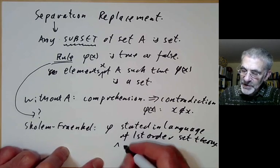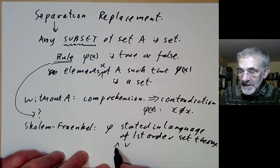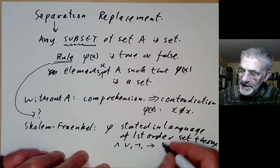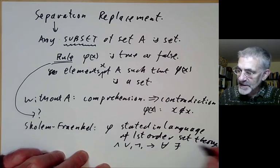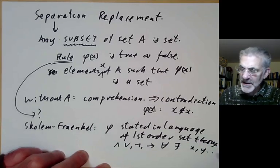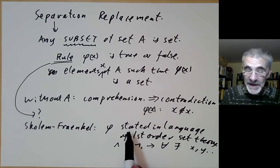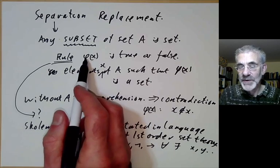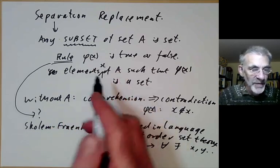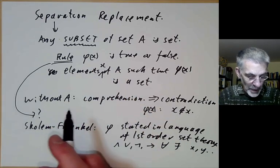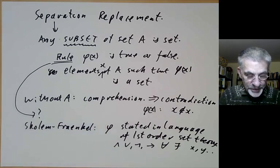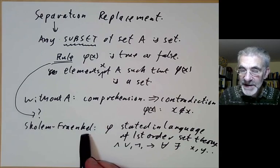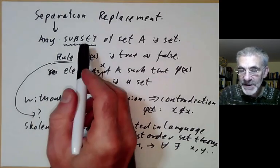That means you can form statements using 'and', 'or', 'not', 'implies', 'for all', and 'there exists', with various variables and so on. This gives a precise description of what you mean by a rule. The rule is also allowed to depend on other sets you've already constructed. So this gives a precise meaning of the axiom of separation.